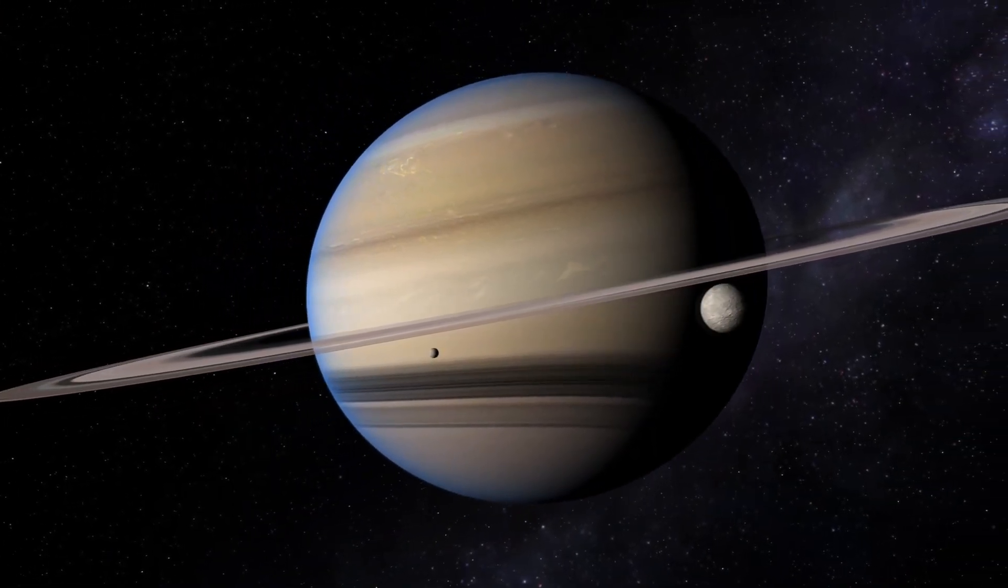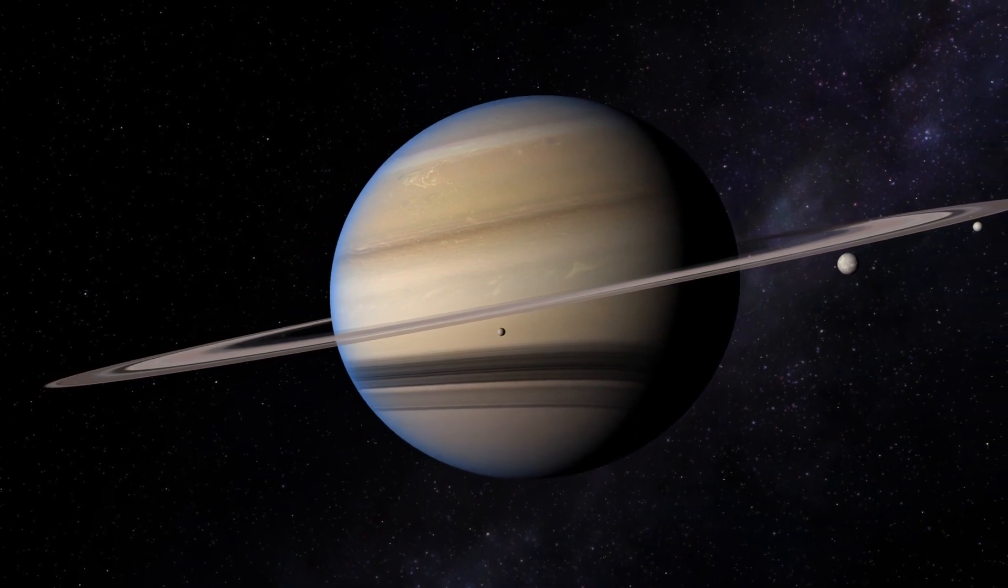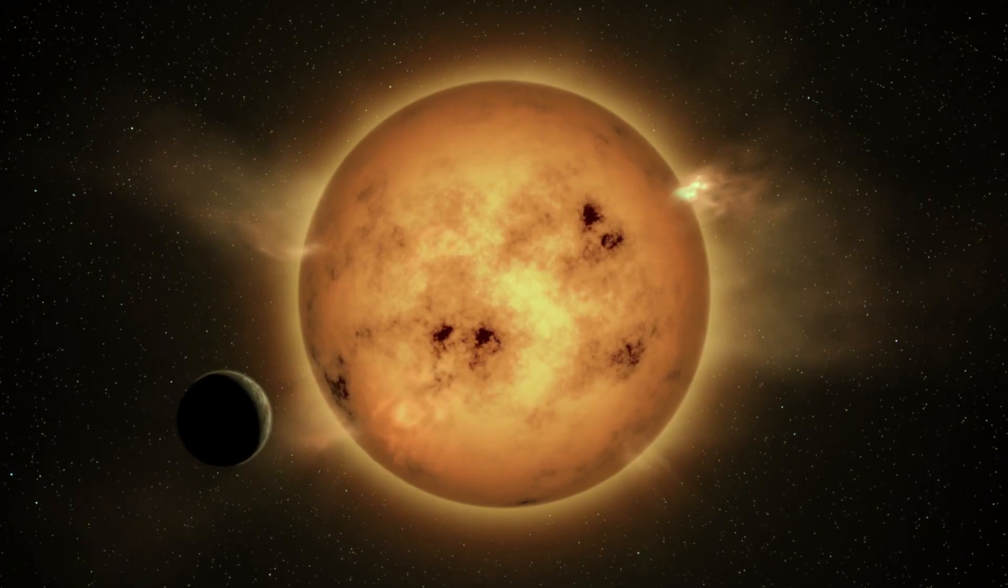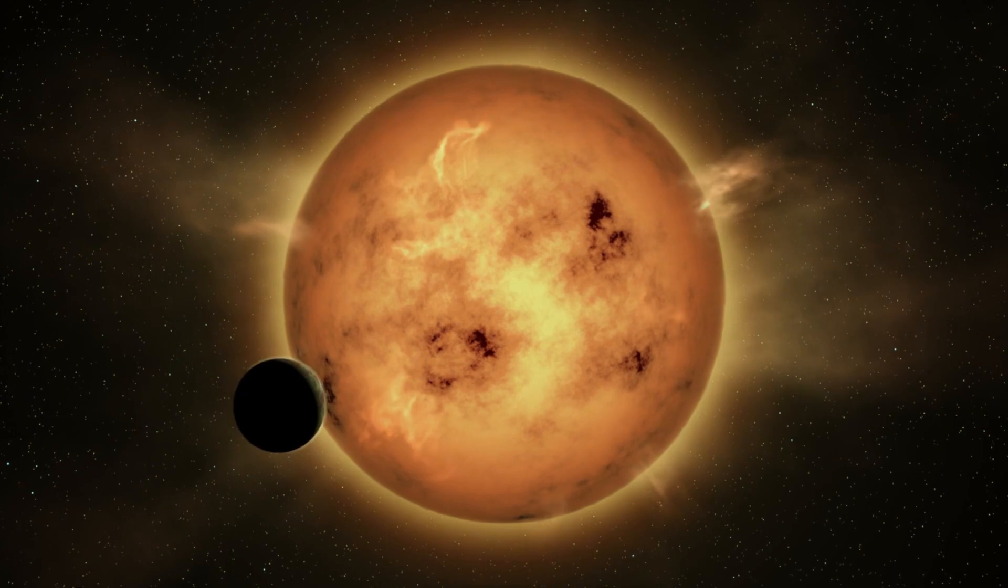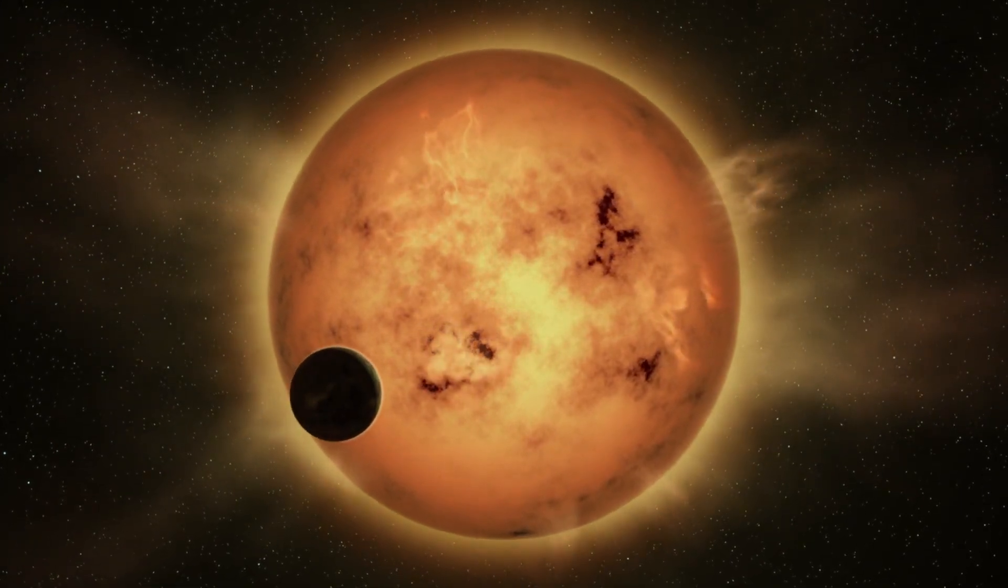If Saturn had not formed at the right time in the sufficient size, Jupiter would have continued migrating in, throwing out objects, unfortunate objects in the inner solar system, and ending up very close to the sun where it would stay. Yes, the Earth would be gone. Or the Earth would have had a terrifying encounter with Jupiter and would have had its orbit changed dramatically.